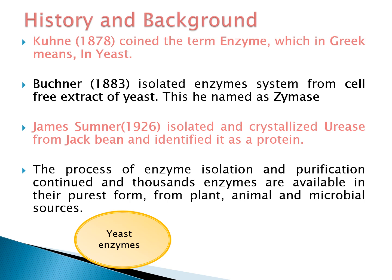History and background of enzymes: In the year 1878, Kuhn first coined the term 'enzyme,' which in Greek means 'in the yeast.' Buchner in 1883 isolated enzymes from the cell-free extract of yeast and named it Zymase. In 1926, James Sumner was the first person to isolate and crystallize urease from Jack Bean and identified it as a protein. Since then, many thousands of enzymes have been identified, purified, and today we have them in their purest form from animal, plant, and microbial sources.